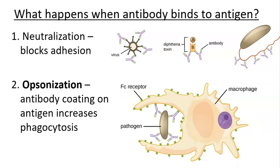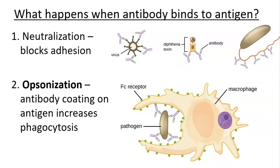A second function is opsonization. When an antibody binds to a foreign antigen, it acts as a flag for macrophages. Macrophages have FC receptors on their surface that bind to the constant region of the antibody. When a pathogen is opsonized, phagocytosis is significantly increased. The macrophage then breaks down the pathogen, loads epitopes onto MHC class II, and displays them to activate T cells.